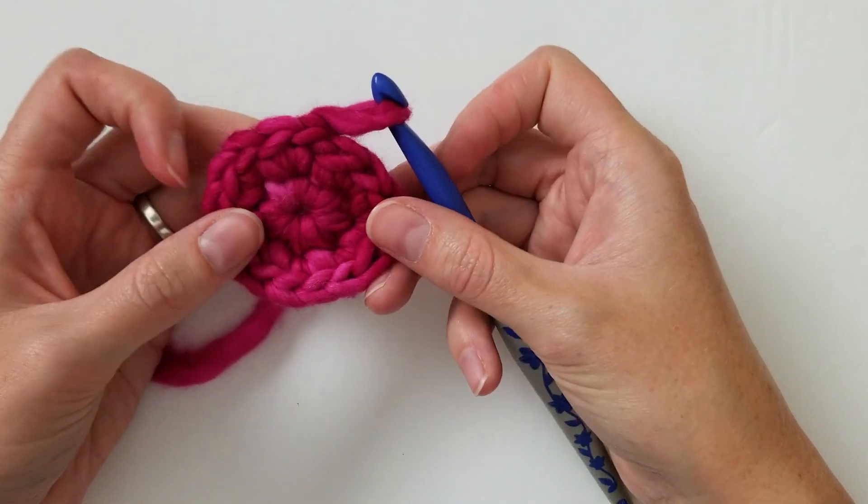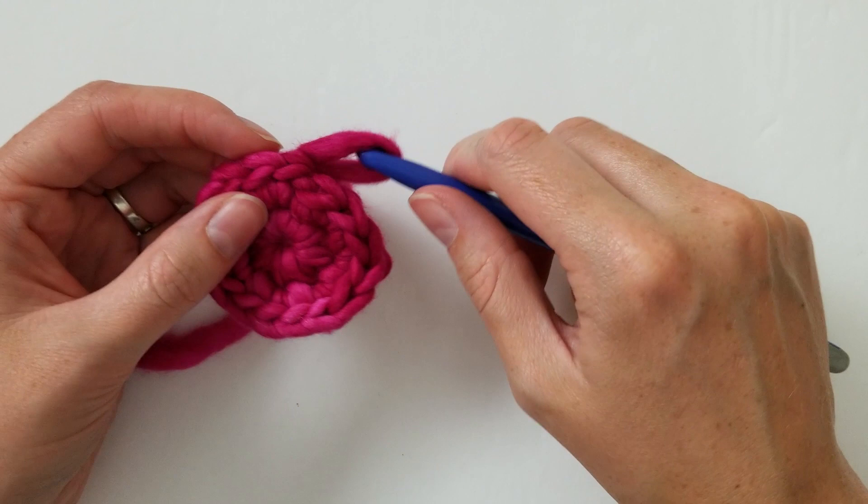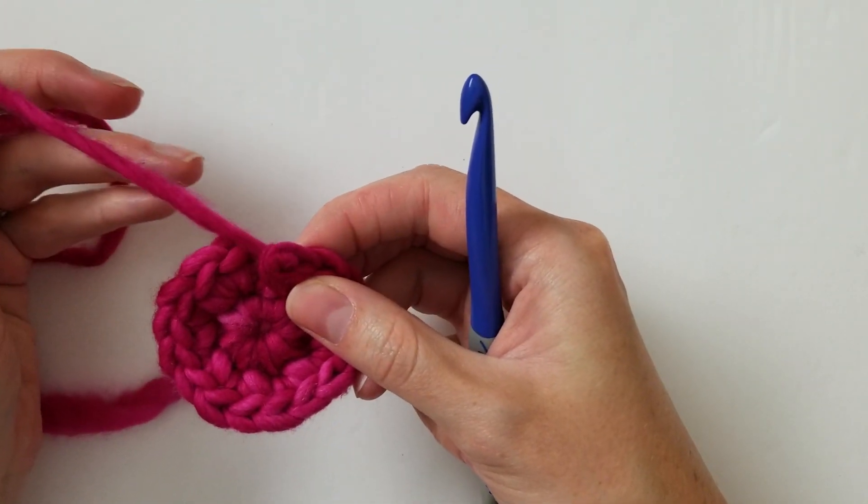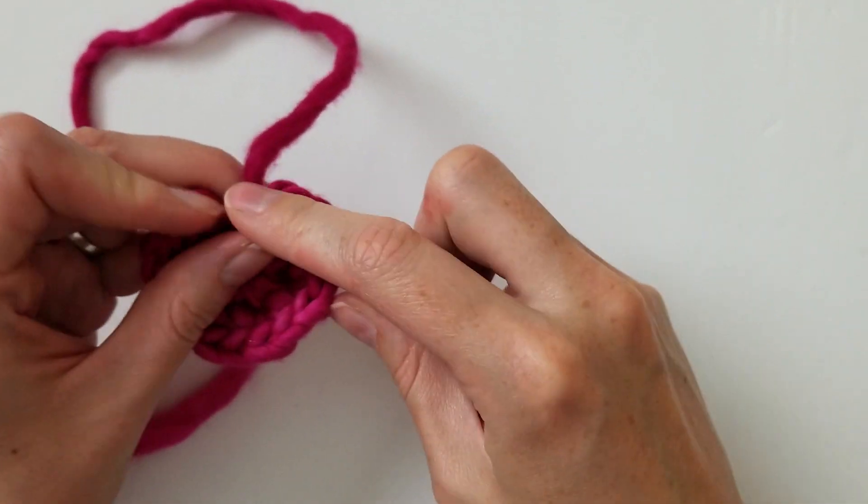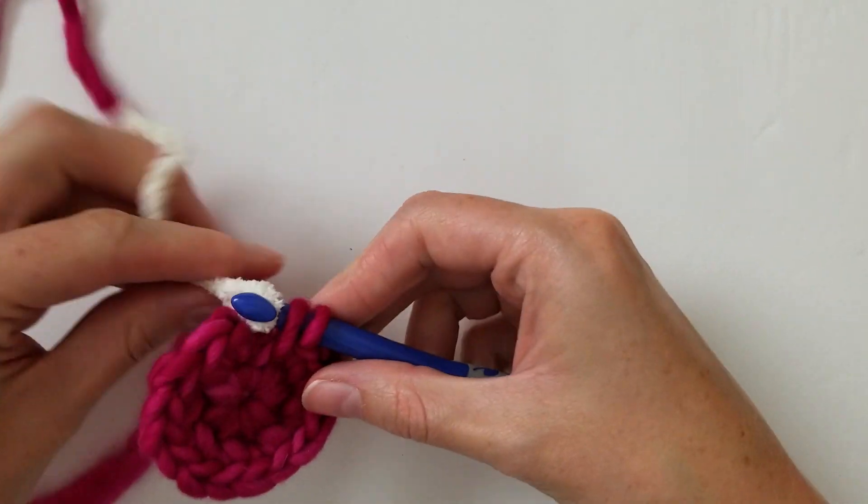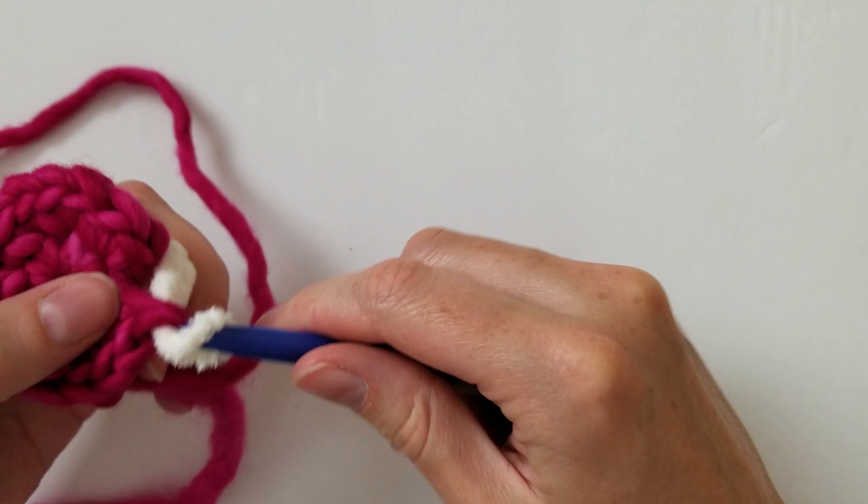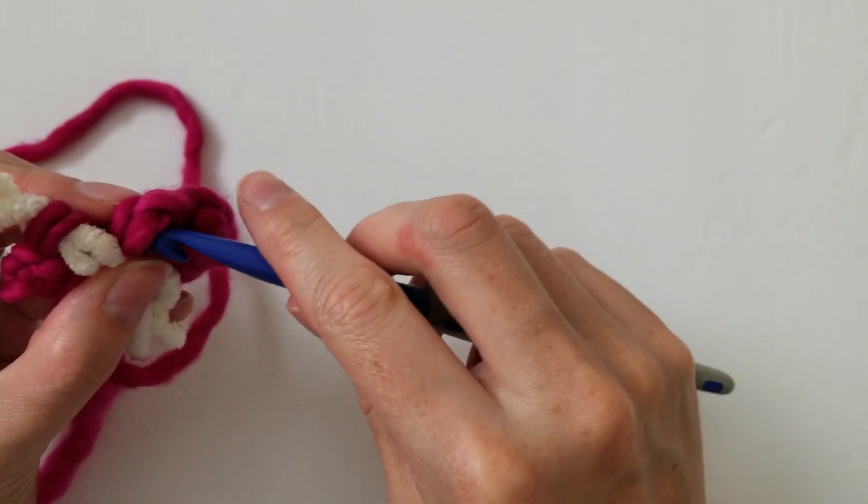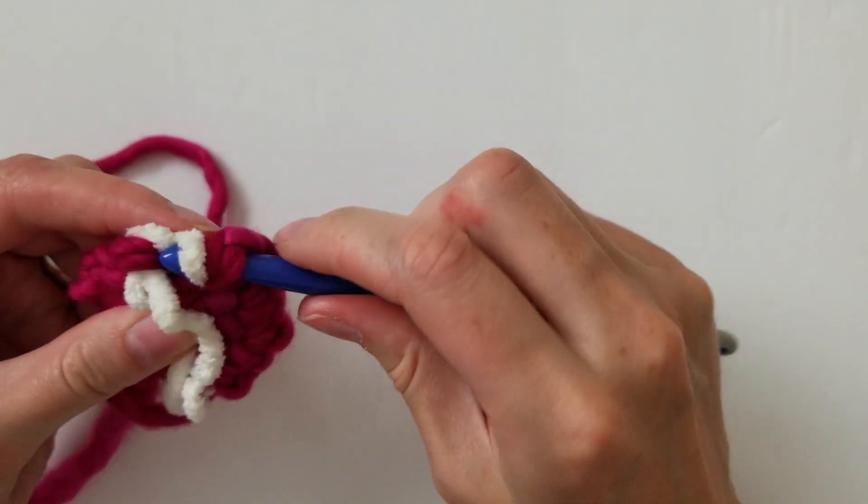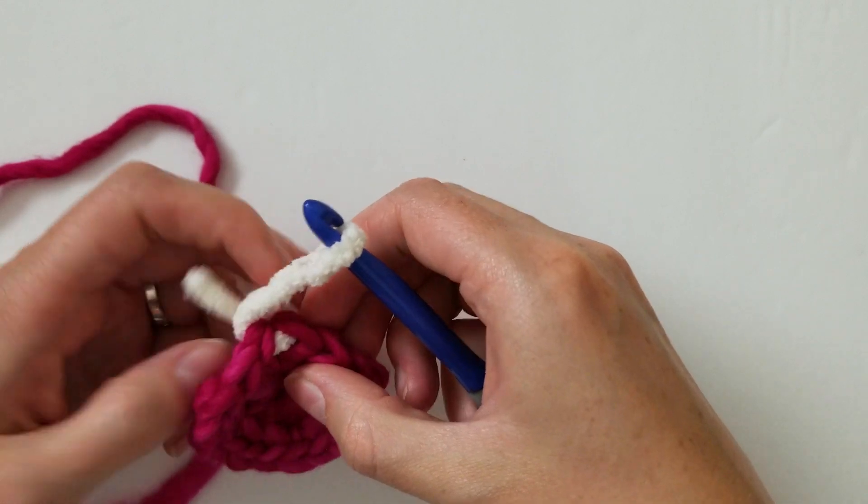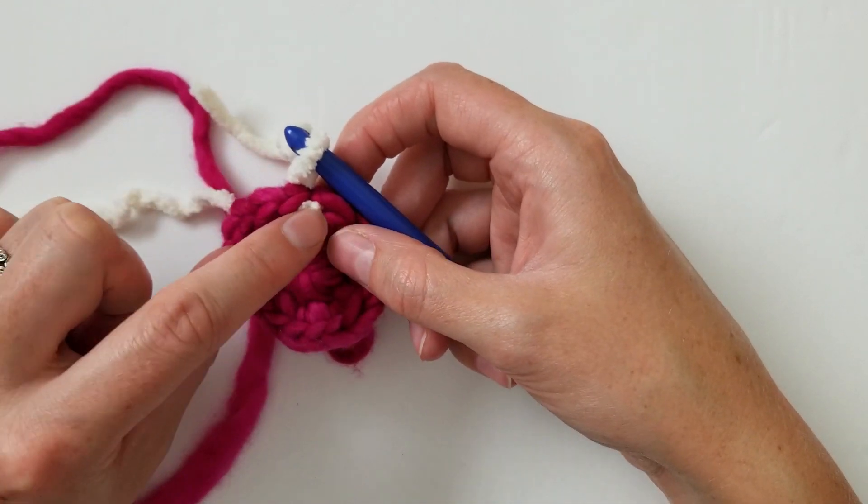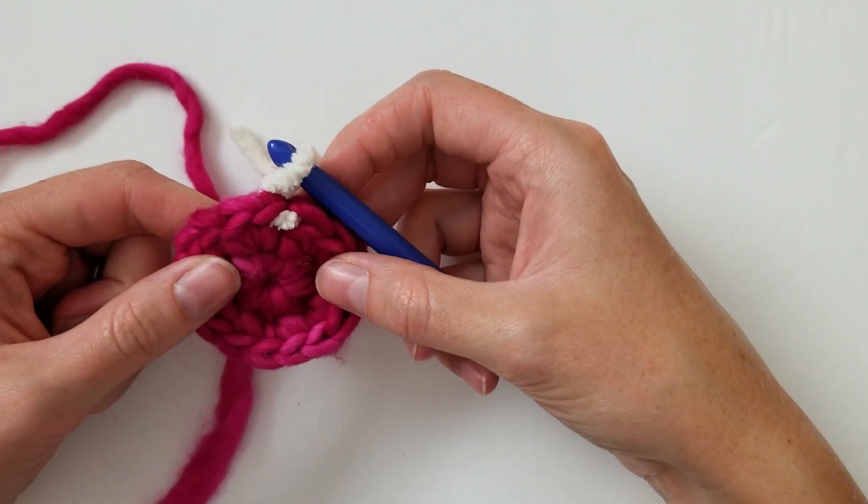So if you want to change colors in the row, there are two ways that you can do it. Either on that last one you can pull it through and then instead of pulling the pink yarn through, you could take a different color and just pull it through. And then when you are going from the back to the front on the next stitch for the invisible slip stitch, you pull it through like that. And that's pretty, like you can still see a little bit right there, but that works relatively well.